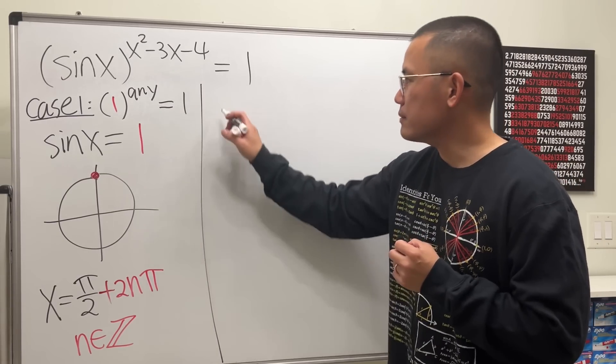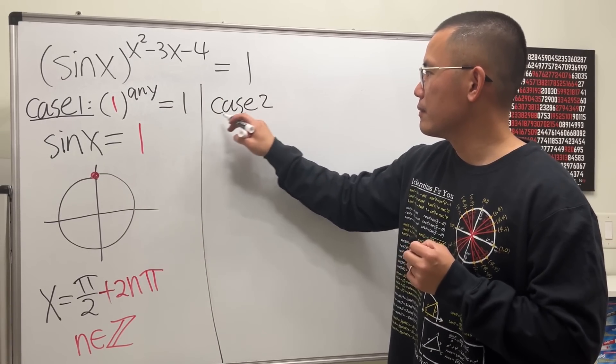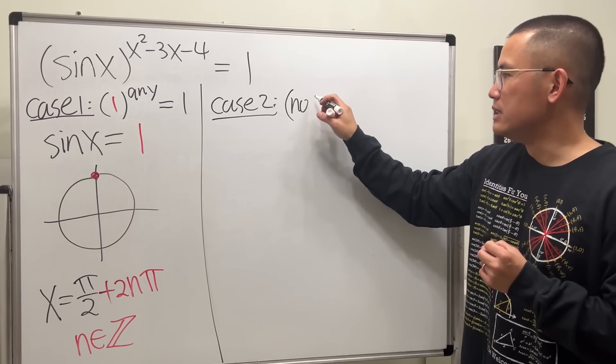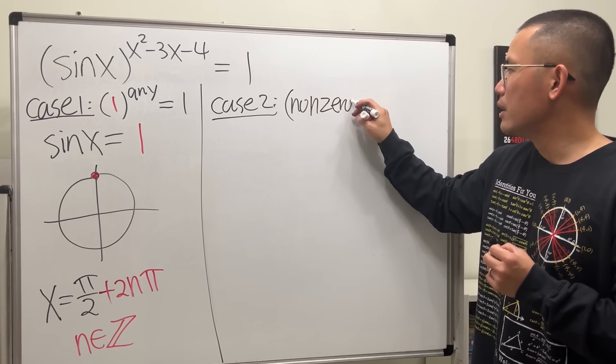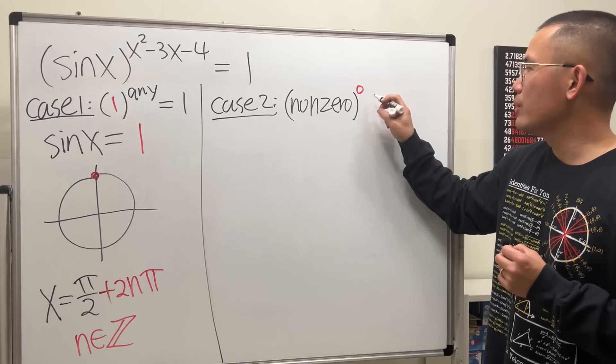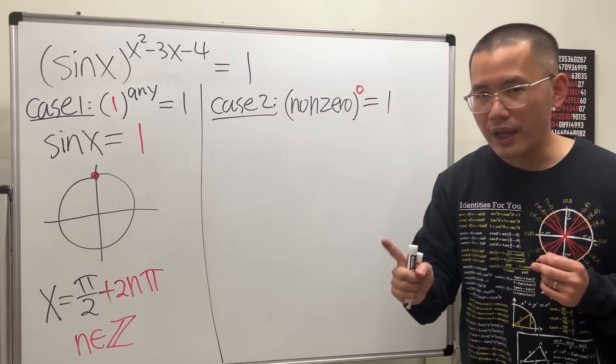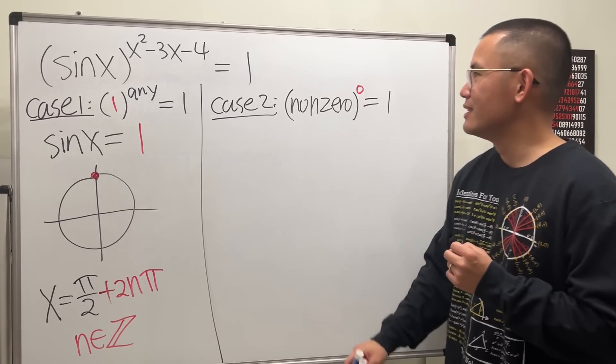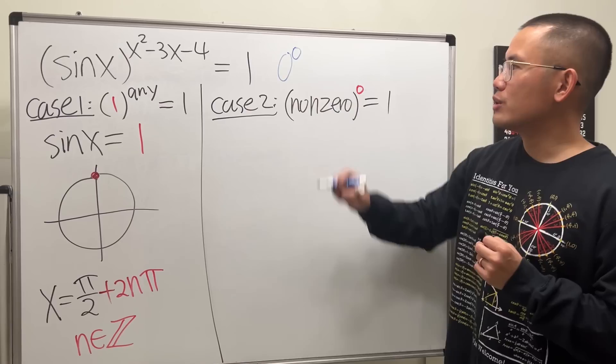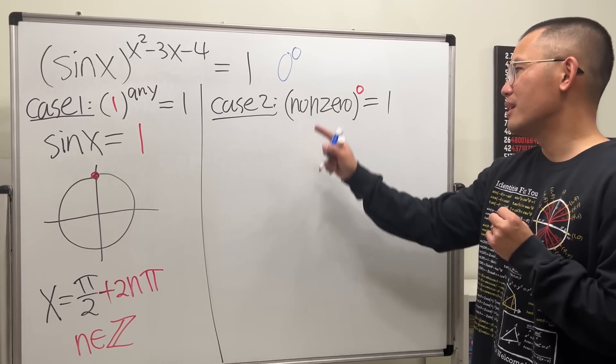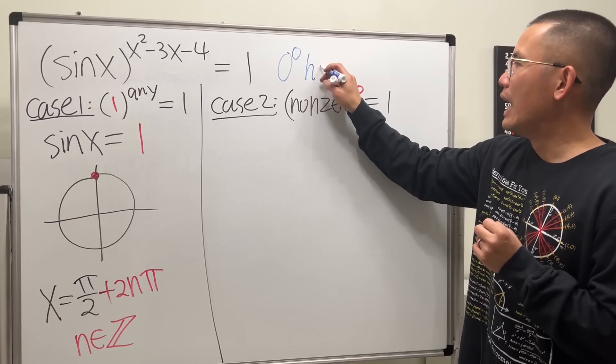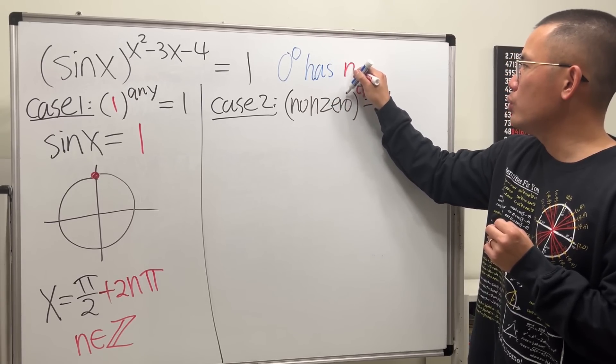Now case 2. That's the case when the base is non-zero, but the power here is zero. This will give you 1. And why did I say non-zero for the base? It's because of this. Zero to the zero's power. In my opinion, this is perhaps the worst thing ever happening to math, because this has no...